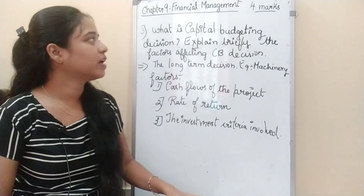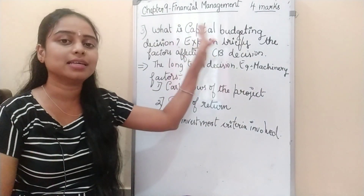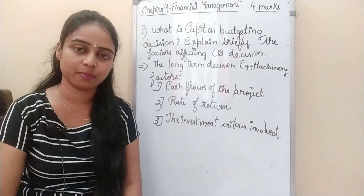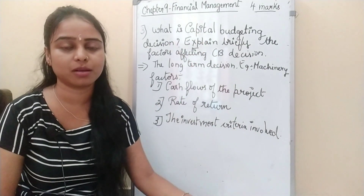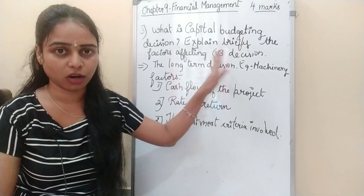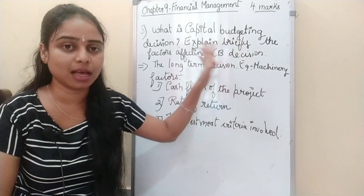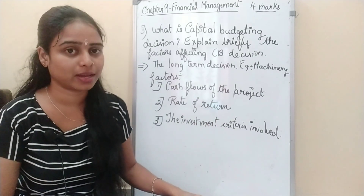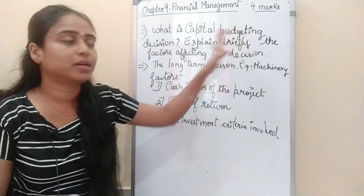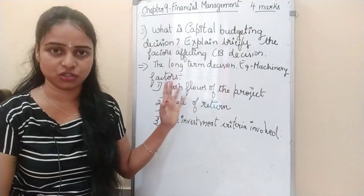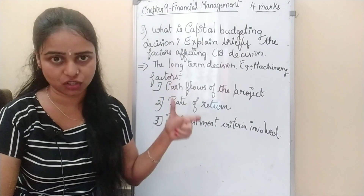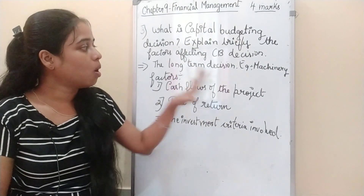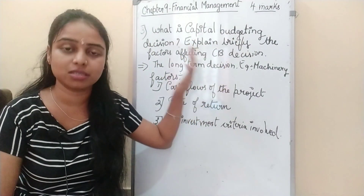In today's class, we are going to learn what is capital budgeting decision and briefly explain the factors affecting it. Capital budgeting is sometimes written as CB, but do not use short forms in your exams. Capital budgeting decisions are long-term investment decisions taken by the organization.